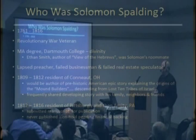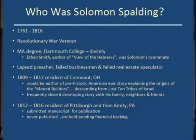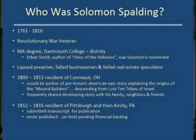Solomon Spalding was born in 1761 in Connecticut and died in 1816 at age 55 — fairly young, and roughly when Joseph Smith was about 10 years old, so their lives did not overlap. He was a Revolutionary War veteran, a private in the Army. He had a Master of Arts degree in Divinity from Dartmouth College, and Ethan Smith, the author of 'View of the Hebrews,' was his roommate while at college.